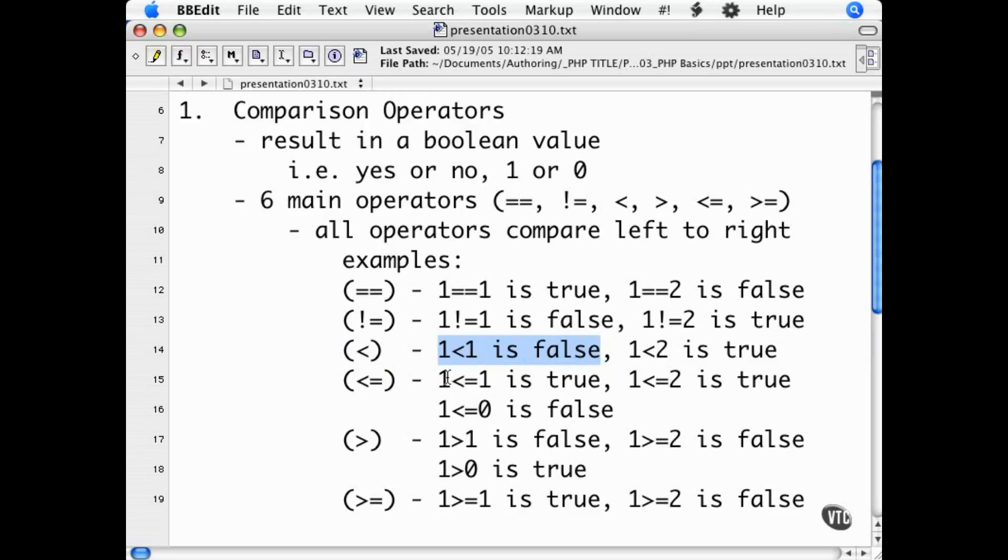With less than equals, if the left side is less than or equal to the right side, it is true, or else it is false.